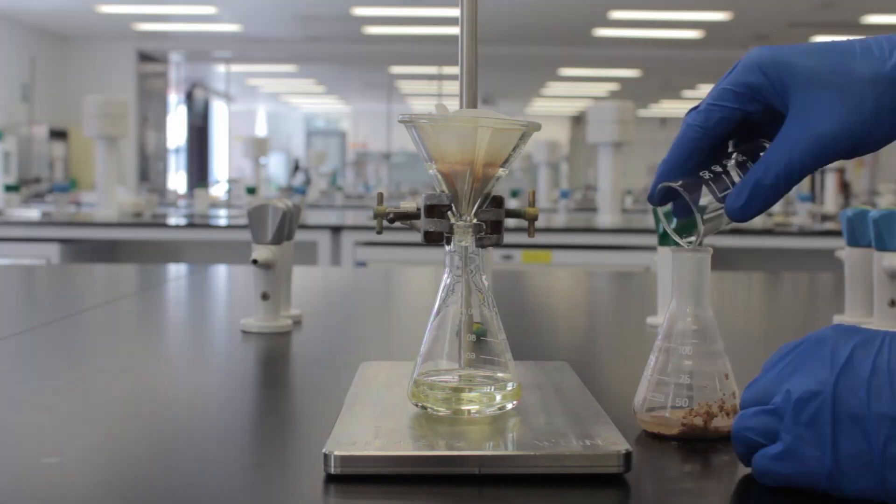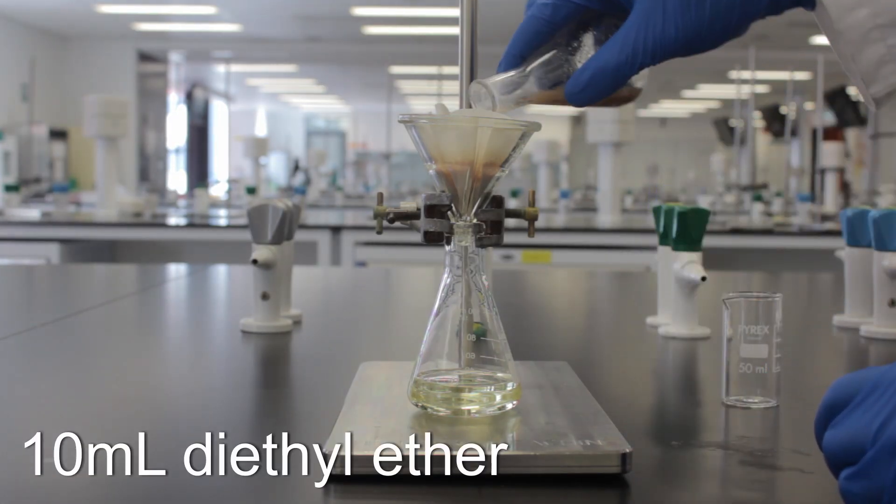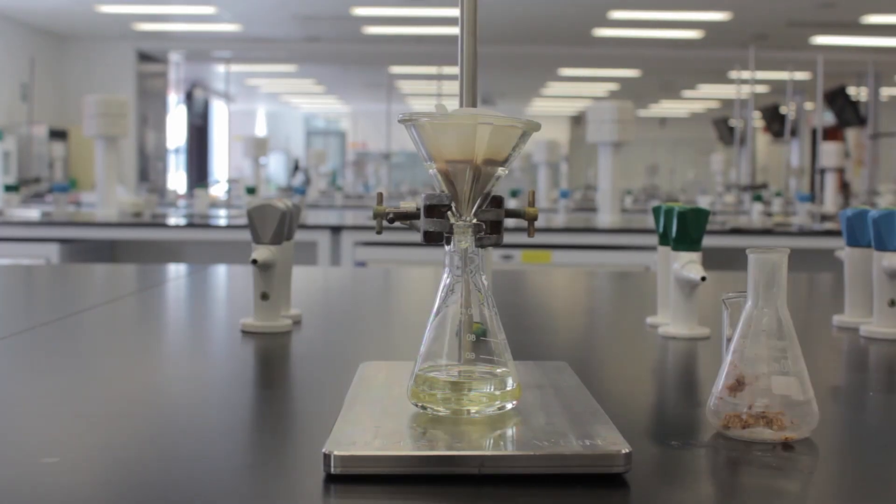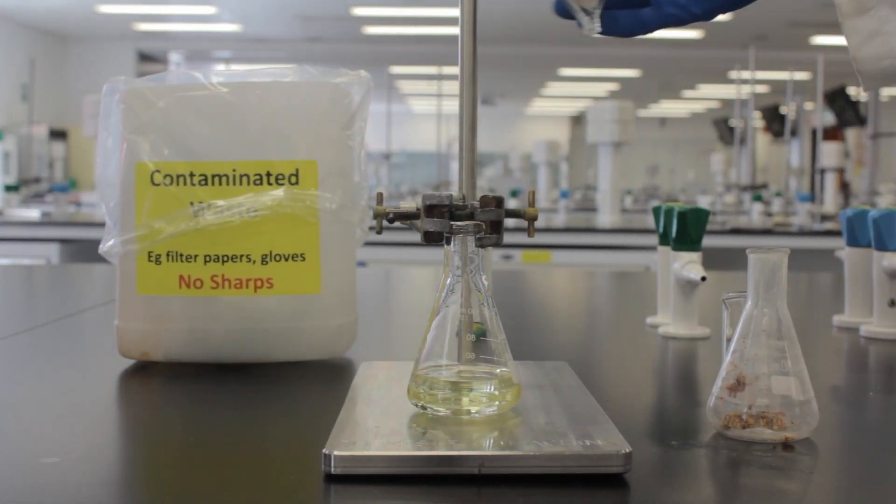Wash the flask with 10 ml of diethyl ether to wash out any leftover product. When it's done dripping, discard the gunk in the contaminated waste container.